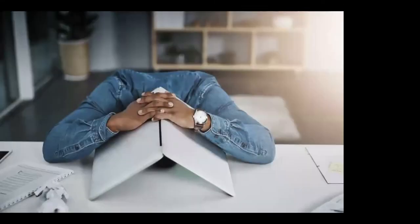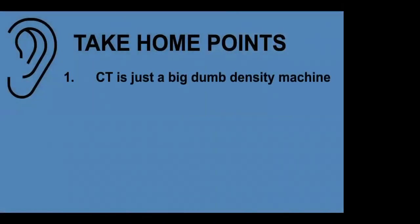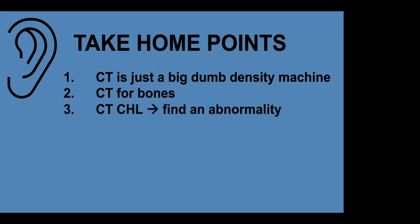Let me wrap up with some take-home points. CT is a density-measuring machine — very good for bones and all the temporal bone structures that are just bone and air. CT is the main workhorse for conductive hearing loss, and we need to find an abnormality almost every time. Radiologists should work hard to find something and not dismiss these studies. MRI is excellent for characterizing soft tissues — external to the ear, the inner ear, the IAC, and the marrow space.